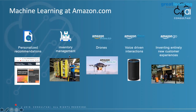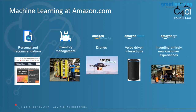The next use case is inventory management using the Kiva robot. When you and I order a large number of products from Amazon, it's not a person going to the store to pick up items - that's done by Kiva robots. You can search for 'Kiva robots Amazon' on YouTube to see them in action. They intelligently pick up inventory and handle warehouse activities. Then there are drone deliveries - Amazon's vision is 30-minute delivery, and that's where the drone comes in.